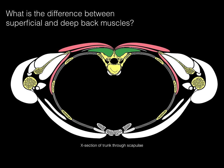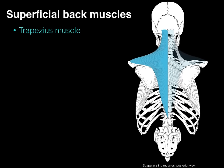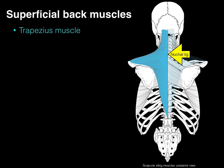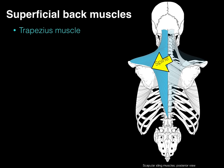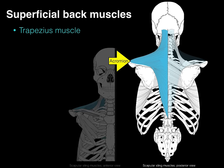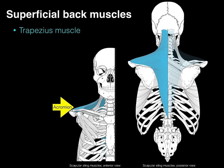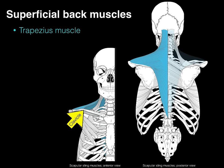The first of the superficial back muscles is the trapezius. It arises from the skull at the external occipital protuberance, then all along the midline — the nuchal ligament, along the spinous processes of the cervical vertebrae, and the spinous processes of C7 down to T12. It attaches laterally all along the spine of the scapula, going to the lateral point of the shoulder, the acromion, and then all along the lateral third of the clavicle.